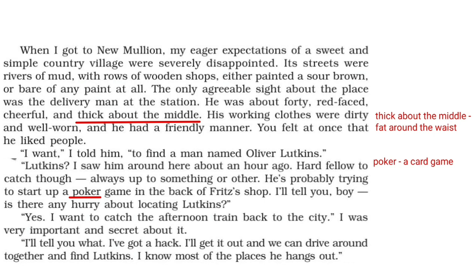The man informed the narrator that Lutkins was a hard fellow to catch, but he had seen him about an hour ago. He was probably trying to start up a poker game — a card game in which bluff is used — in the back of Fritz's shop. The man then asked if there was any hurry. The narrator said he wanted to catch the afternoon train back to the city. The man offered to get his hack — a horse cart — and drive around together to find Lutkins, since he knew most of the places Lutkins hung out.